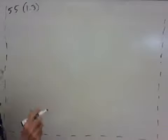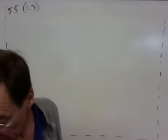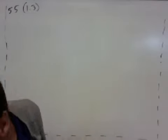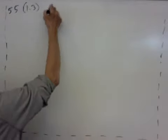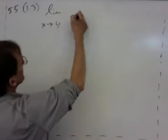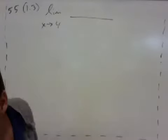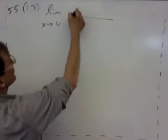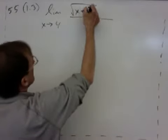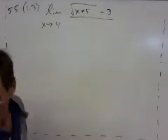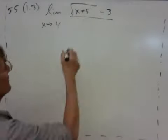And the problem is, find the limit as x approaches 4 of square root of x plus 5 minus 3 over x minus 4.